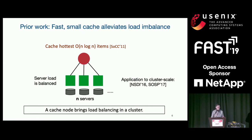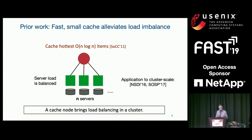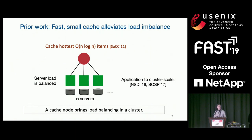There is a requirement that your front-end cache needs to work as fast as the aggregate of N end servers — then all server loads can be balanced. Based on this result, there are some recent applications in NSDI '16 and SOSP '17 using newer devices like SSDs and software/hardware switches to act as this cache node. It has been shown that using a single cache node, we can bring load balancing to a cluster.